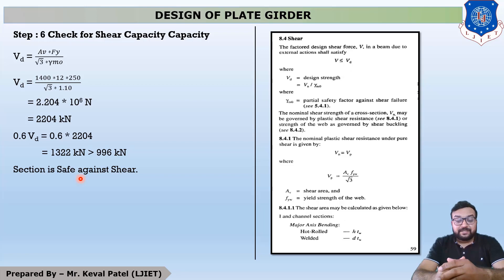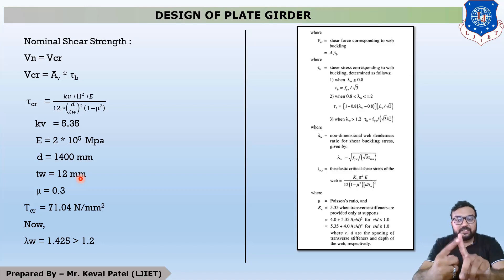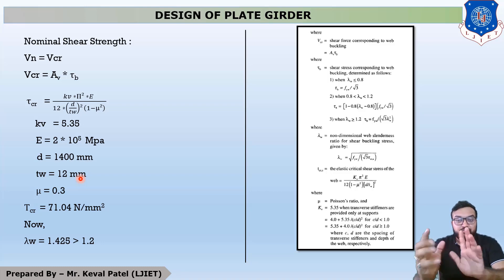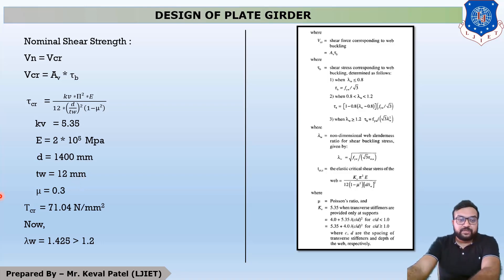Our last step is web buckling. There are two methods: the simple post critical method given on page 59, and the tension field method on page 60. When no clarification is given about which method to use, you must use the simple post critical method. The equation is VCR = Av × τv.